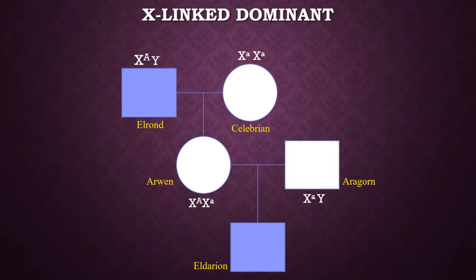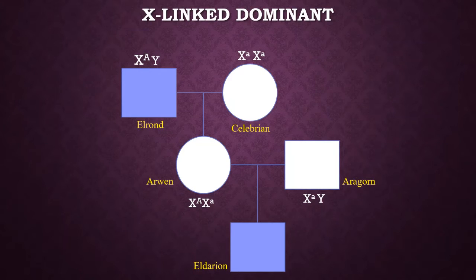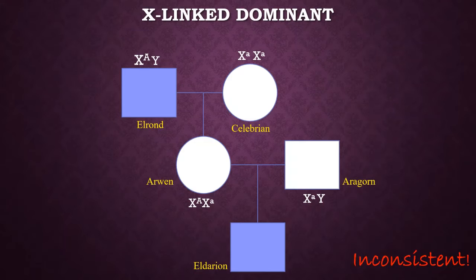First, we'll look at the X-linked dominant mode of inheritance. Since it's X-linked dominant, any individual with a dominant allele has to have the trait. Since Elrond has the trait, he has a dominant allele on X, while Celebrían is homozygous recessive, since she does not have the trait. Their daughter Arwen does not have the trait, but she is a carrier, since she receives one allele from each of her parents. However, this does not make sense because any individual with a dominant allele has to have the trait. Therefore, we can say that this mode of inheritance is inconsistent.